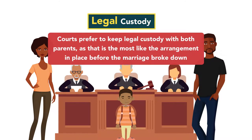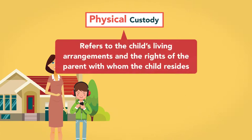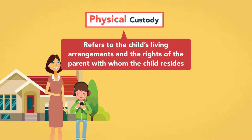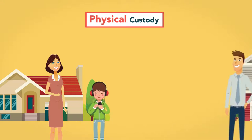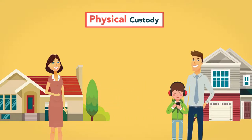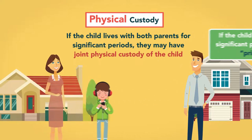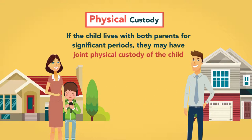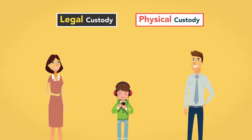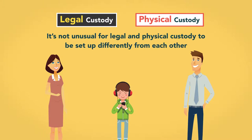When possible, courts prefer to keep legal custody with both parents, as that is most like the arrangement in place before the marriage broke down. Physical custody refers to the child's living arrangements and the rights of the parent with whom the child resides. Physical custody can also be granted to both parents or to just one. There are many ways that legal and physical custody can be broken down, and it's not unusual for legal and physical custody to be set up differently from each other.